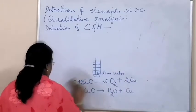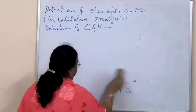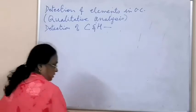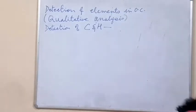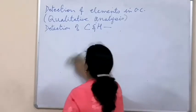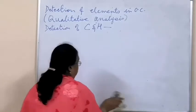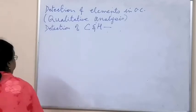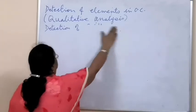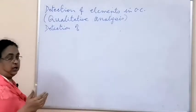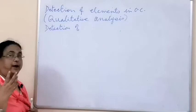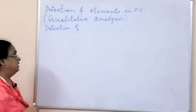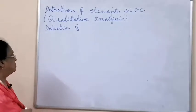Detection of oxygen is not very easy and the process is not very dependable or perfect. There is no definite method to find out oxygen, but one test is done: the organic compound is heated in an atmosphere of nitrogen, and when droplets of water are seen, it is believed that the compound contains oxygen.